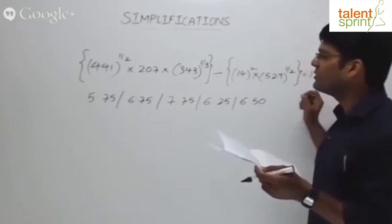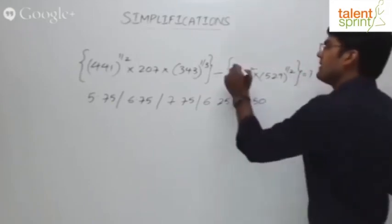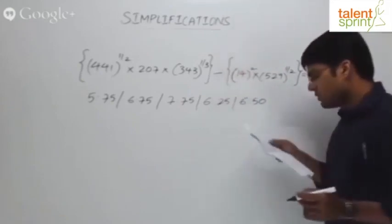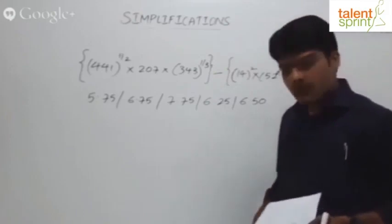441 power 1/2 into 207 into 343 power 1/3 divided by 14 squared into 529 power 1/2 equals to what? Now how do you solve this question? Apply the BODMAS rule.